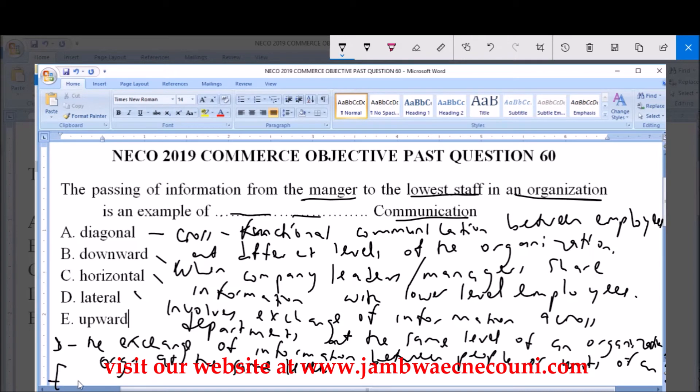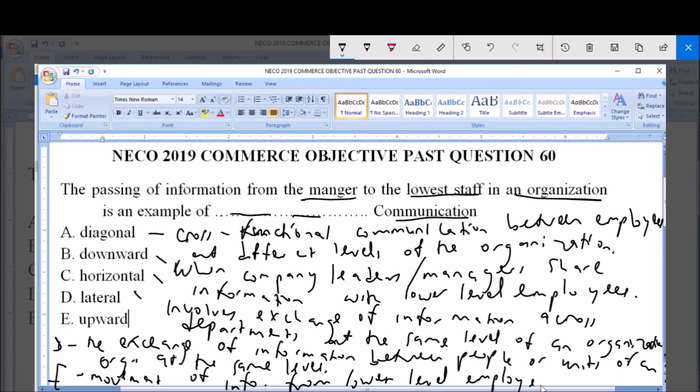Option E, which is upward, involves movement of information from lower-level employees to the leaders.